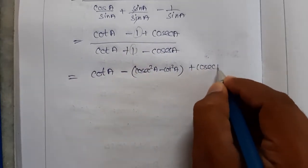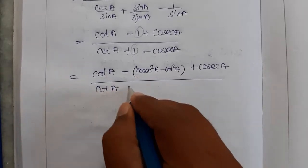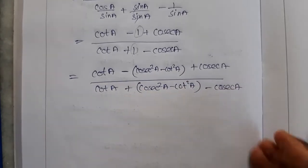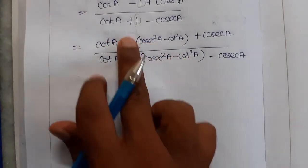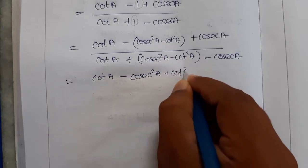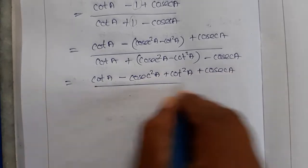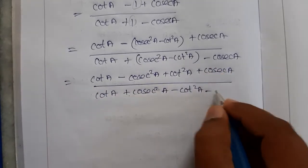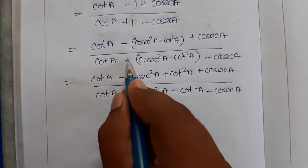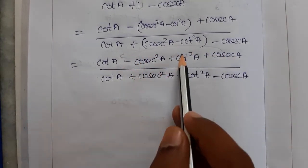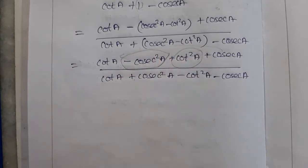The denominator becomes cot A plus cosec squared A minus cot squared A minus cosec A. Now let me bring the non-square terms together. We can see the numerator and denominator are each in the form of a squared minus b squared, so by rearranging we will factor them using the a squared minus b squared identity.